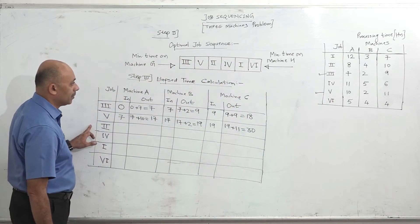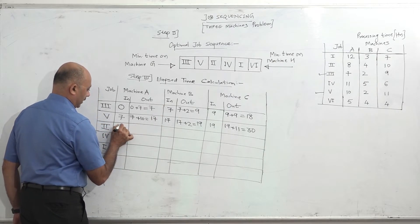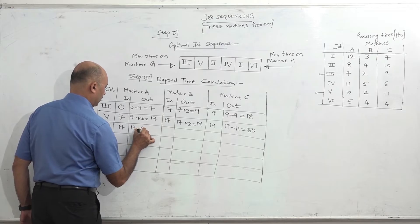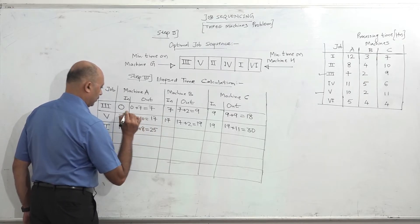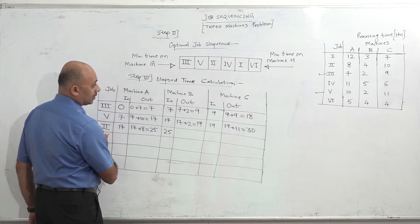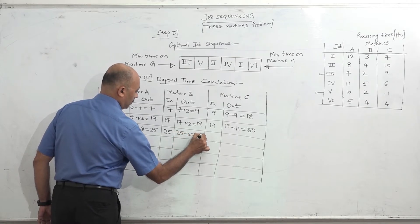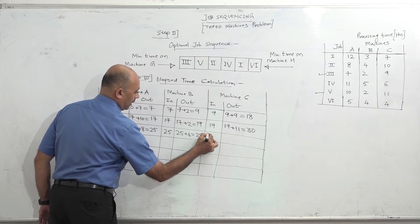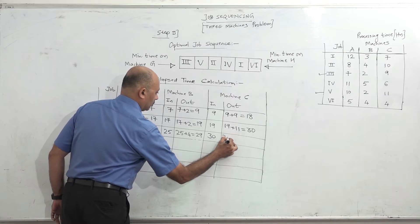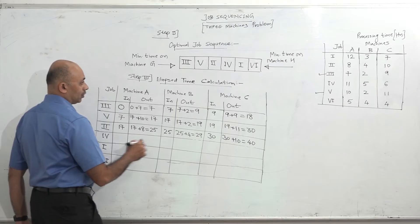Job 2: time on A is 8, in-time is 17, so 17 plus 8 = 25. In-time on B is maximum of 25 and 19 = 25. Time on B is 4, so 25 plus 4 = 29. In-time on C is maximum of 29 and 30 = 30. Time on C is 10, so 30 plus 10 = 40. Job 2 is done.